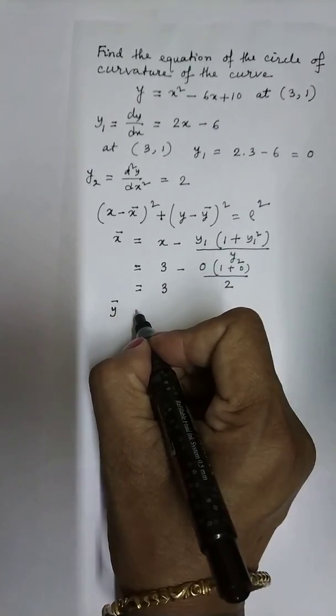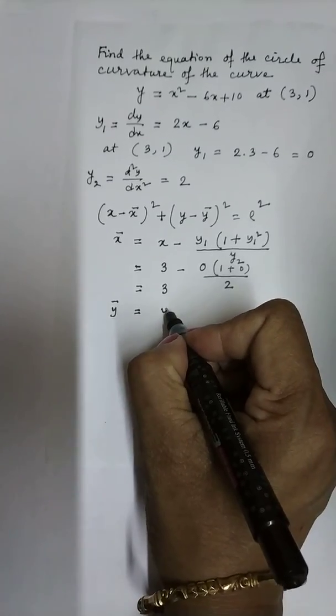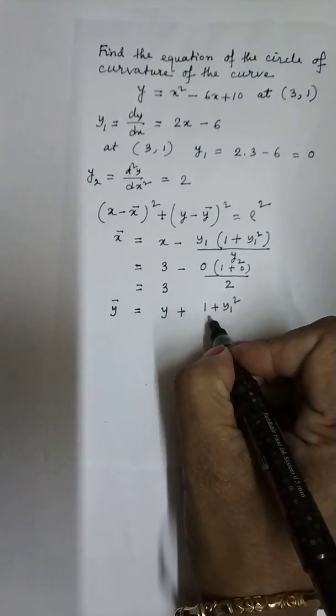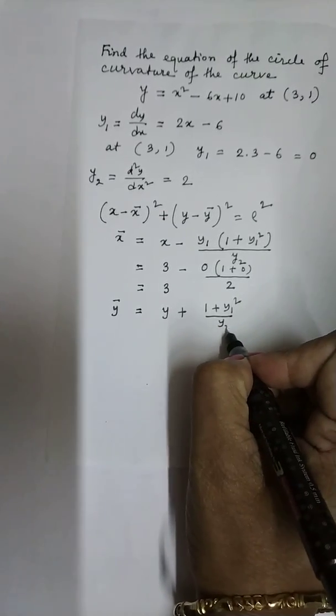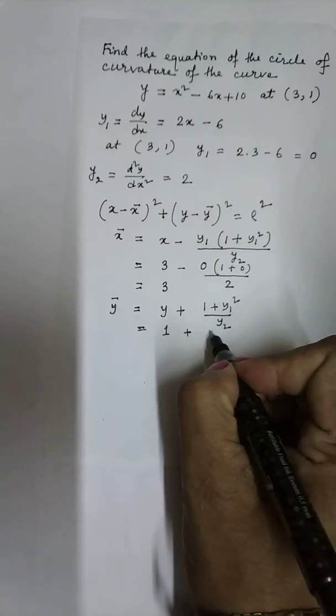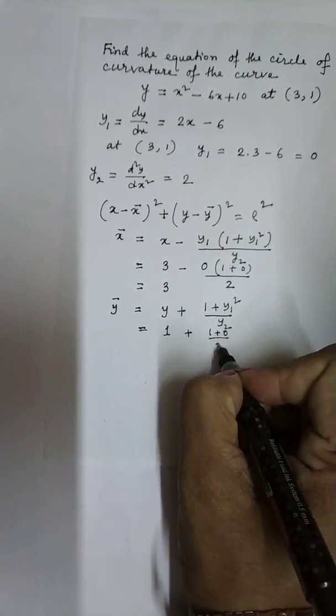Next we have to find ȳ, that is y plus (1 + y1²)/y2. So that is 1 plus (1 + y1²)/y2.